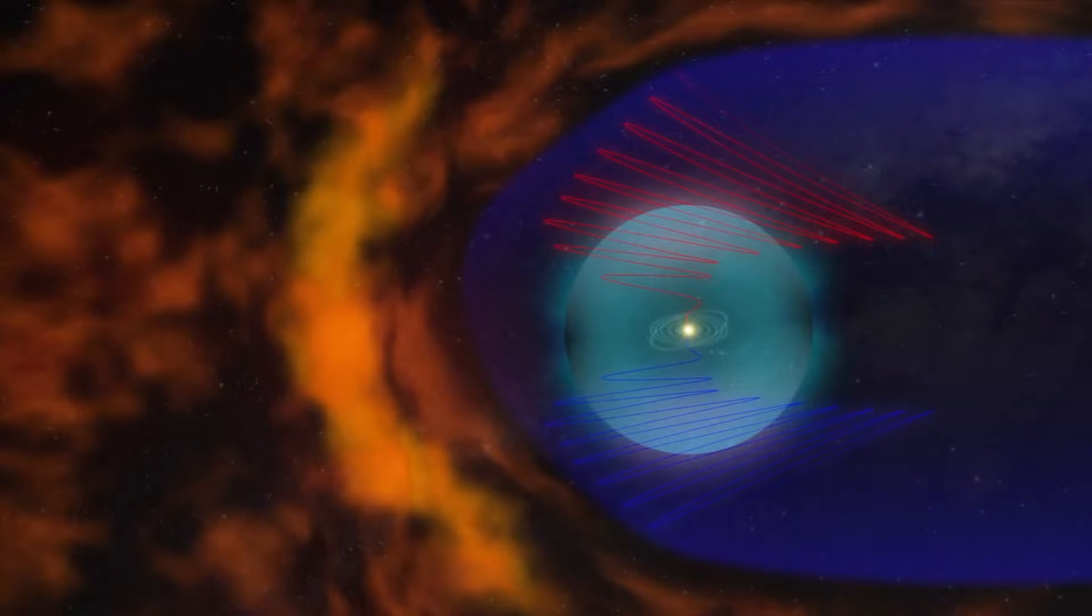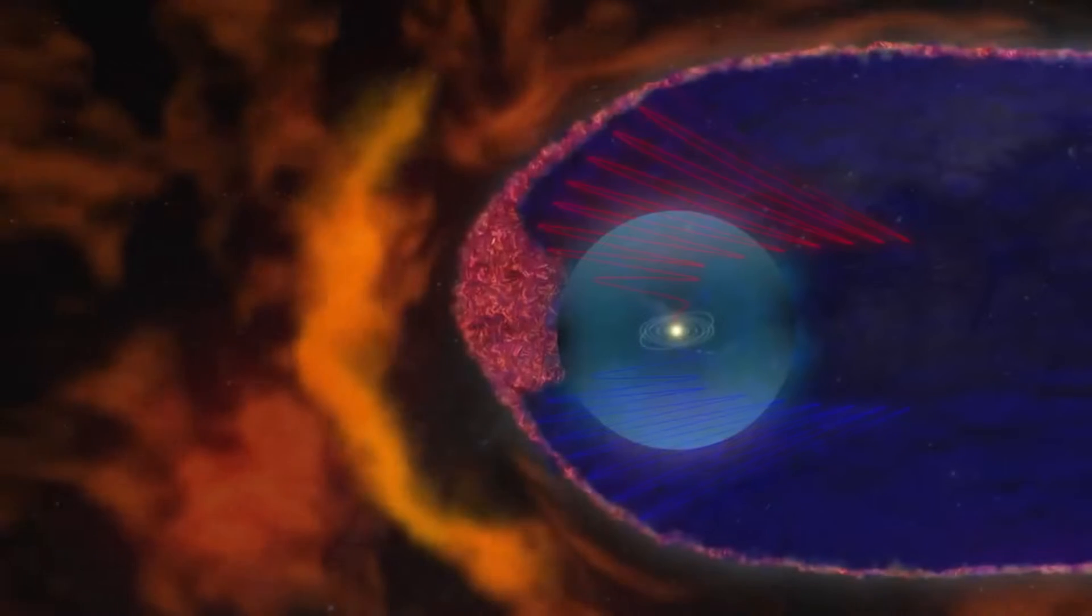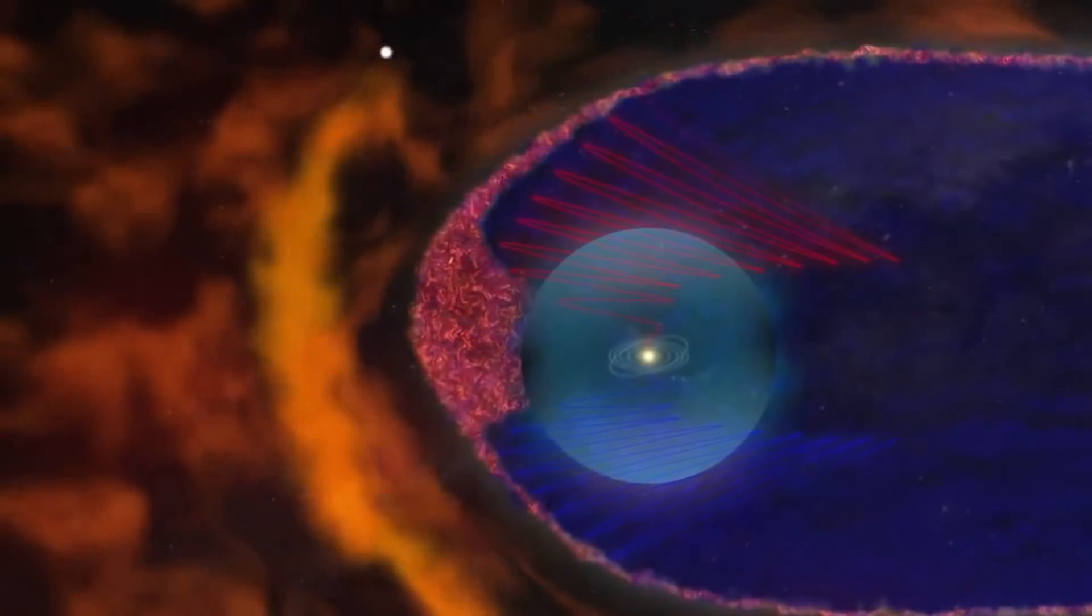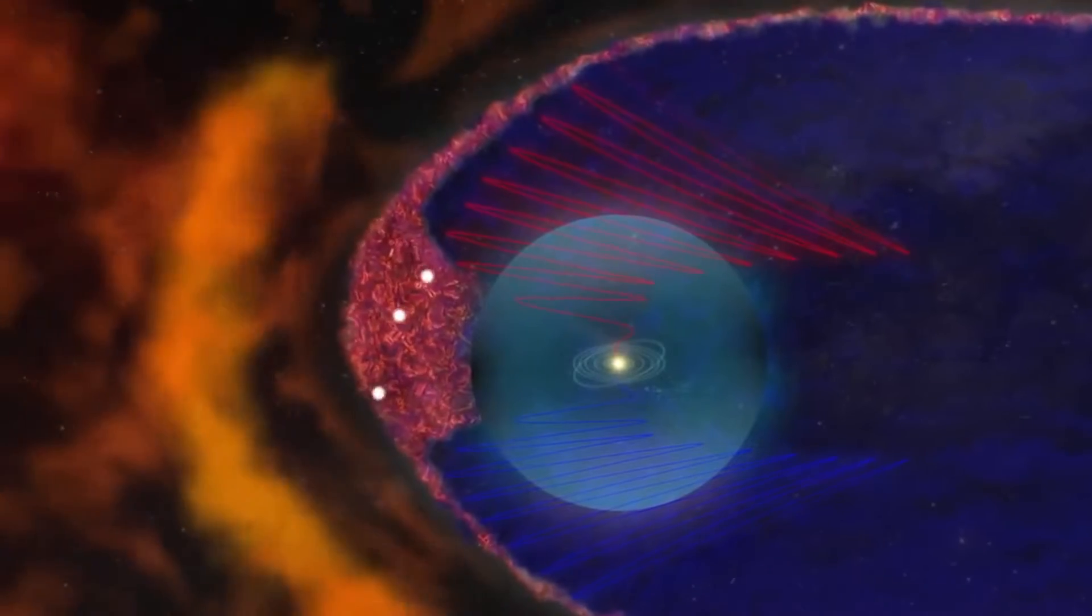The Voyager 1 spacecraft have made the only direct on-site measurements of these limits. However, this is the case only at a certain time and place. To better understand the heliopause's dynamic behavior, scientists have utilized this data to develop predictive models.